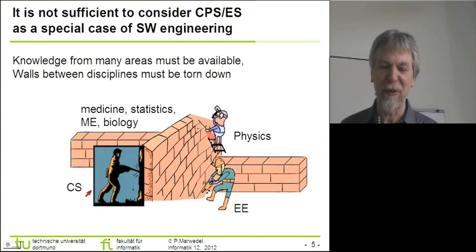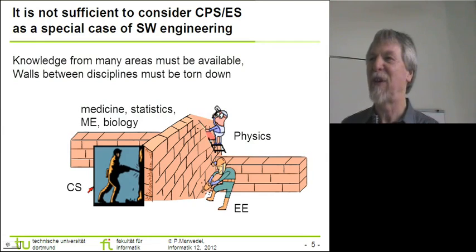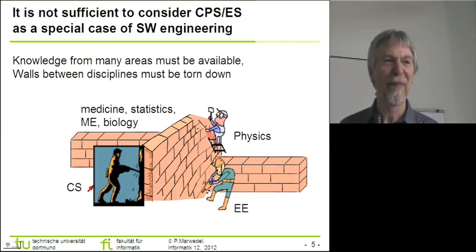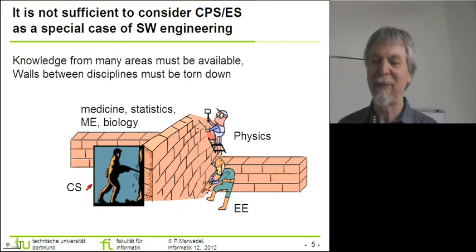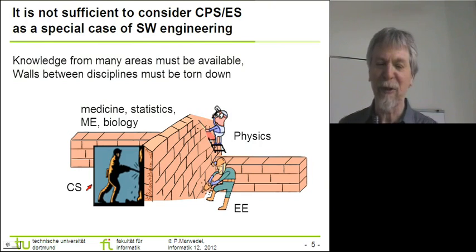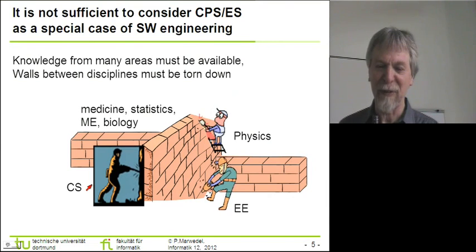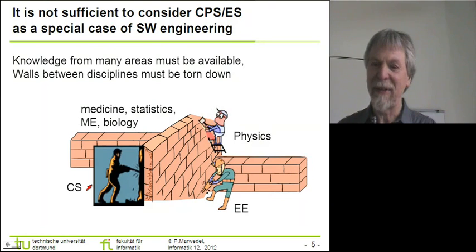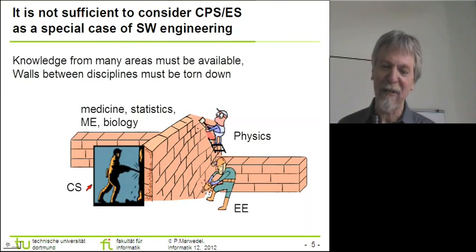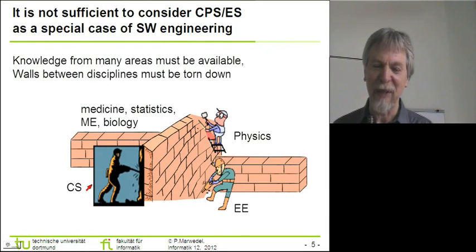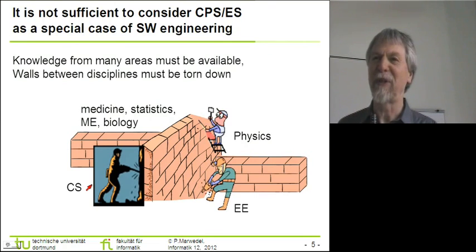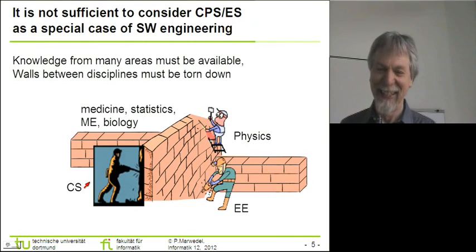I am raising the question to the audience: what is wrong with this little animation? What is the problem there? I am not referring to the fact that the wall to computer science is taller than in the other cases. From my point of view, there is no progress. I put these people on the slide about 10 years ago and in these 10 years there is no progress — it is always the same. Hopefully, there will be more progress in the future.